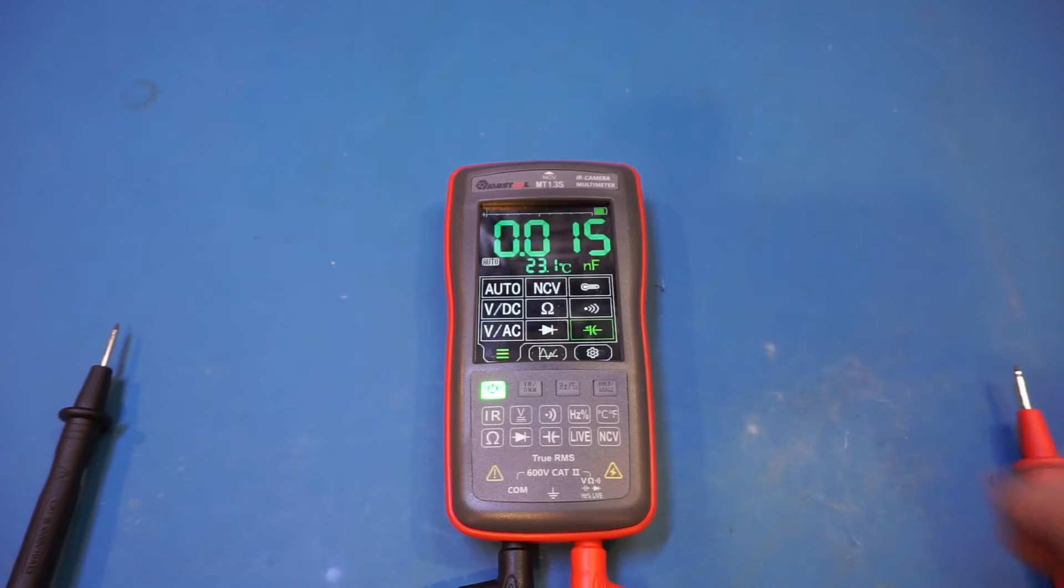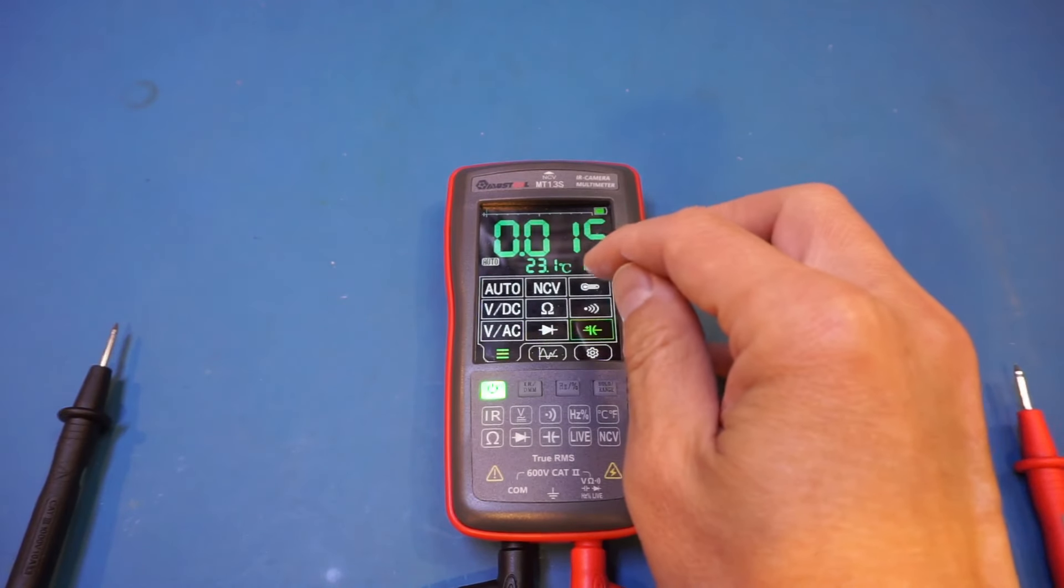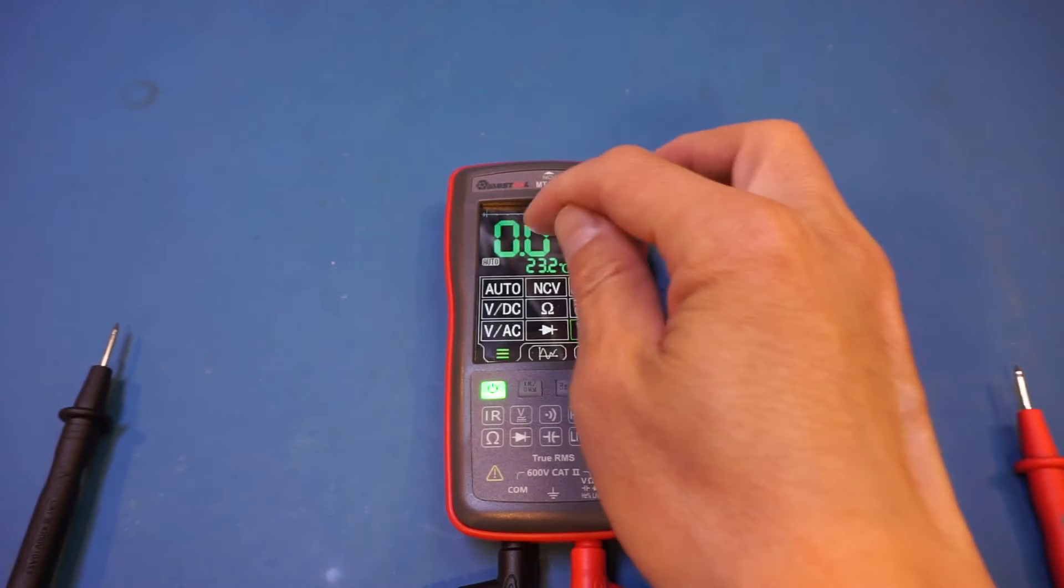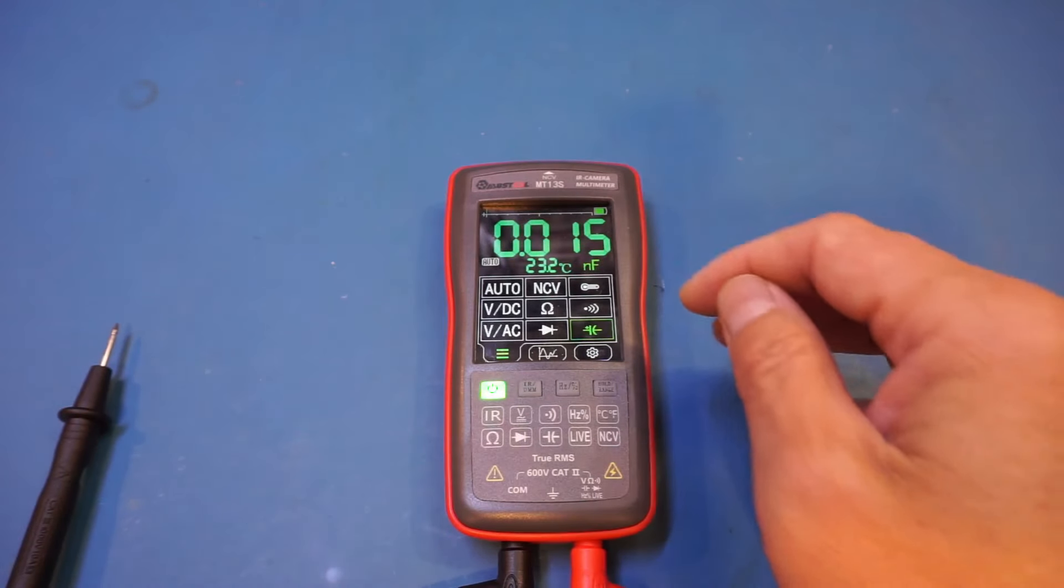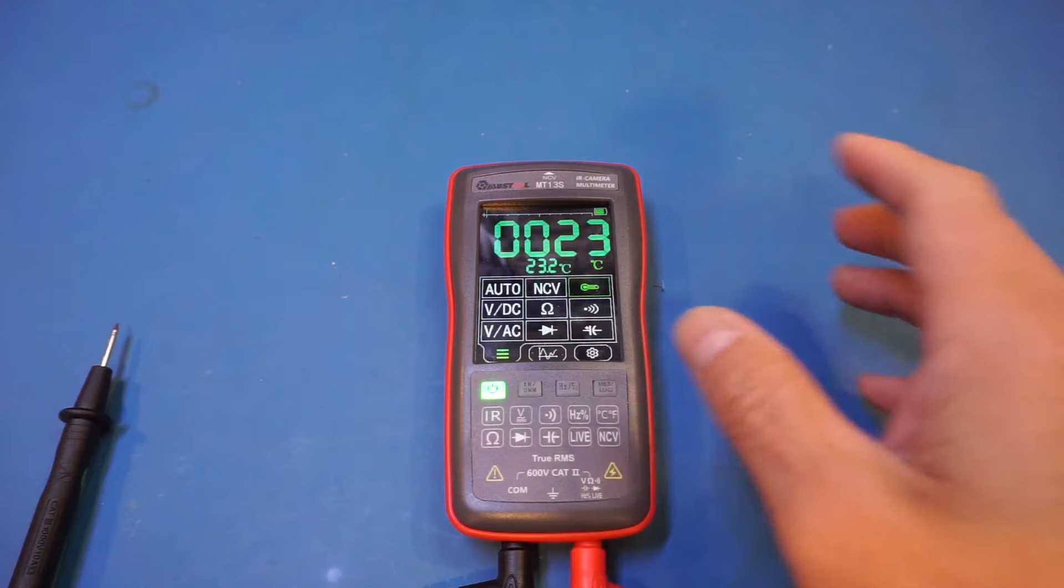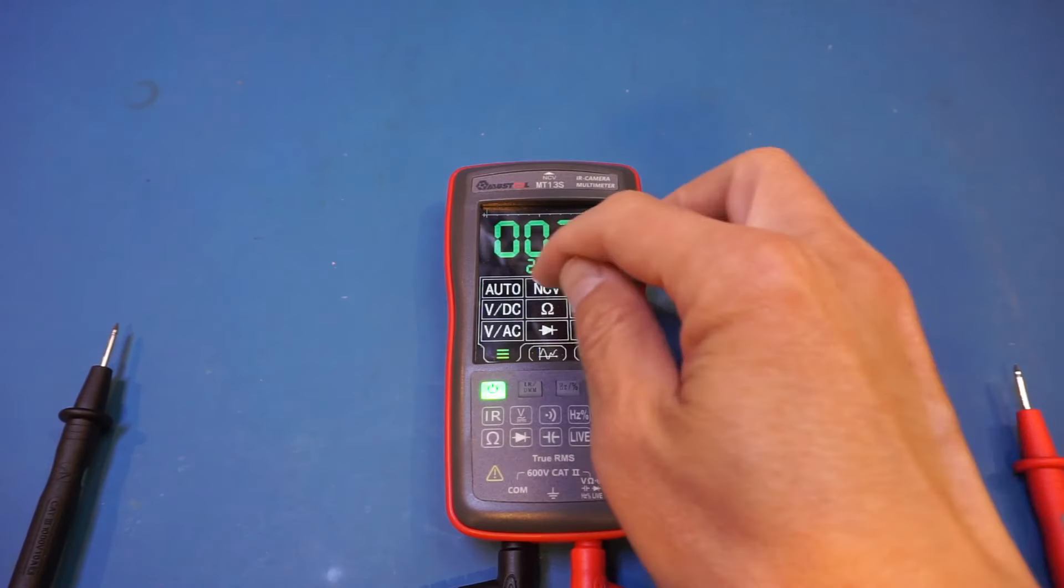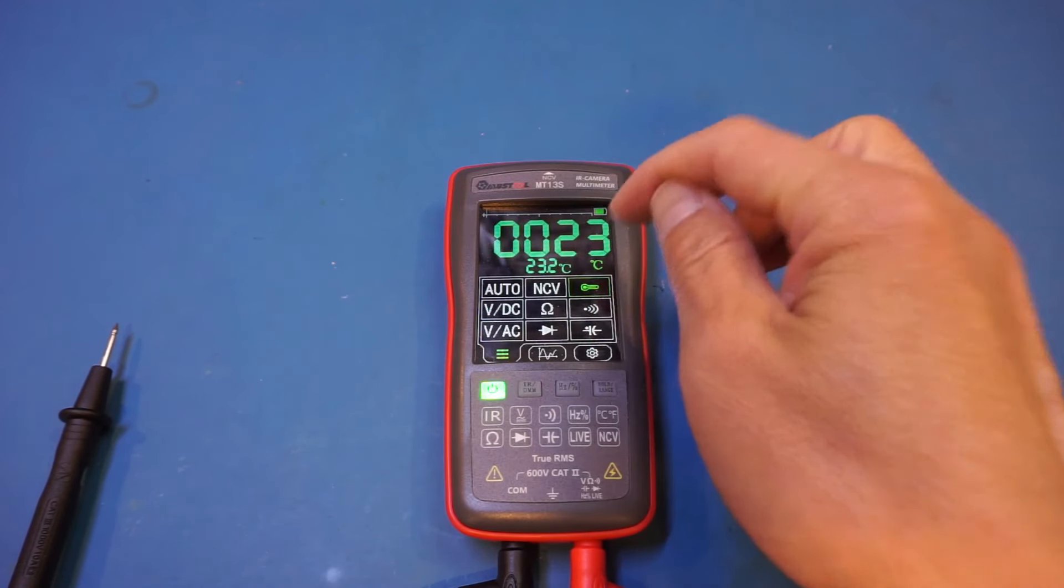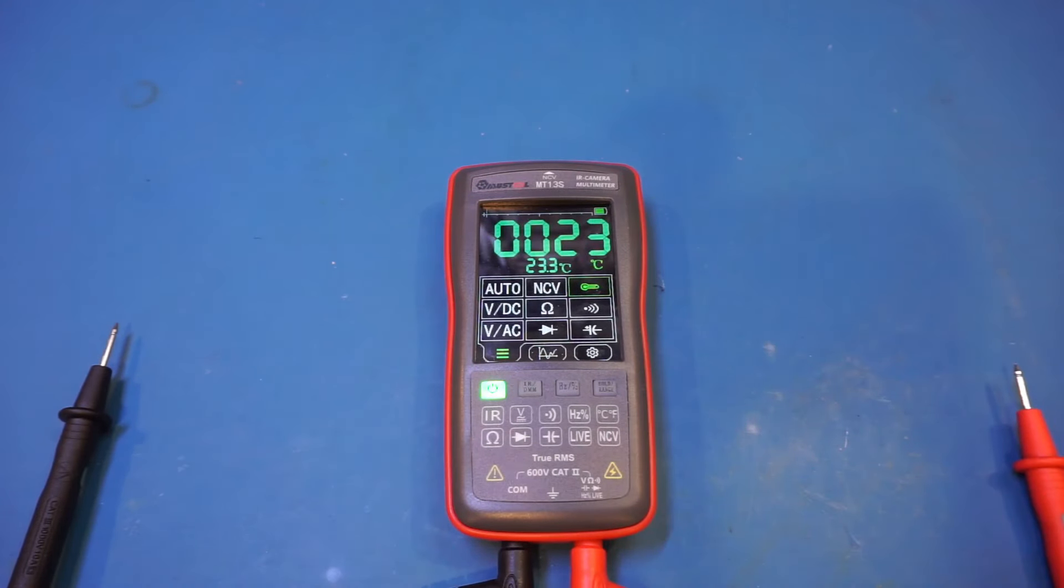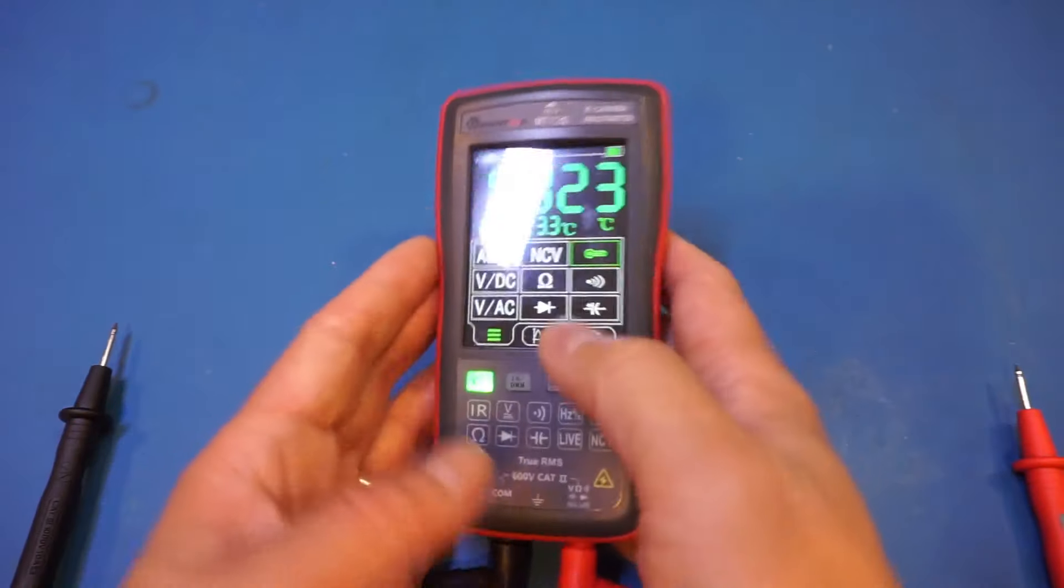Now, I'm not sure why they bothered to include a dedicated temperature measurement range, as the temperature you can see here is displayed as secondary in all measurement ranges. But let's take a look here. As you can see here, in this temperature measurement mode, you actually don't get that first decimal reading on the main display here. So to me, they probably should have just removed this option from the menu. And that's pretty much all the functions that you can find on this meter.